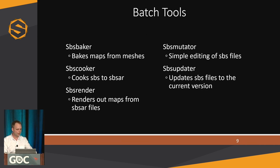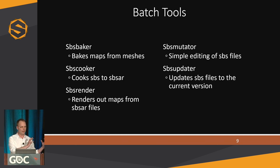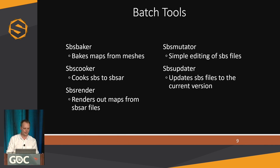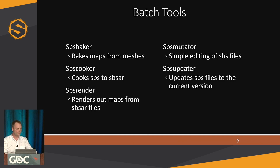The first component is our batch tools. These batch tools mimic a lot of the functionality inside Substance Designer and Substance Painter. The automation toolkit is more on the Substance Designer side — more of a procedural and large-scale application. With the batch tools, there is SBS Baker for baking operations from a command line, SBS Cooker that cooks SBS files to SBSAR files, SBS Render that renders out maps from your SBSAR files, SBS Mutator for making minor changes to SBS files, and SBS Updater to bring old Substance files to the latest version.